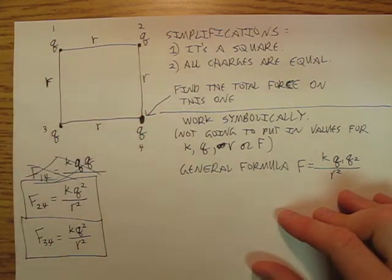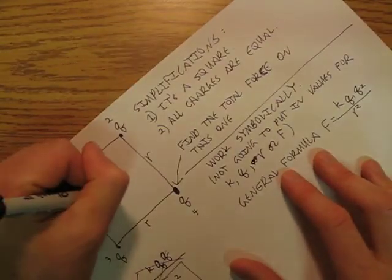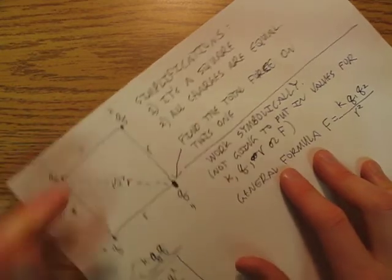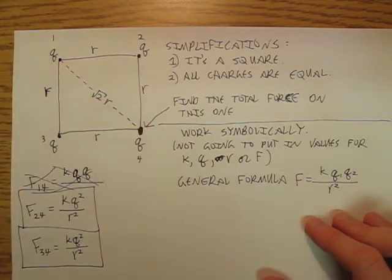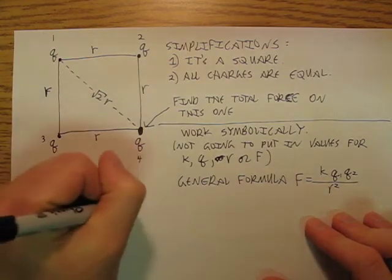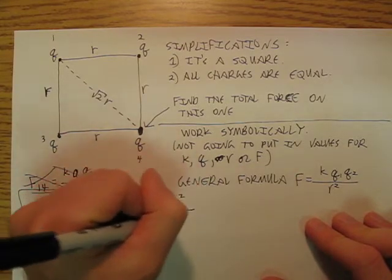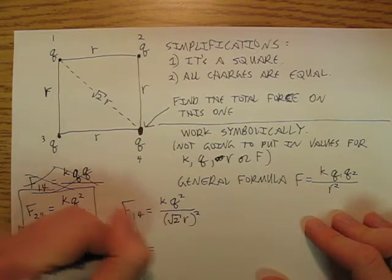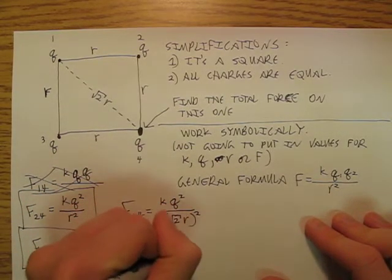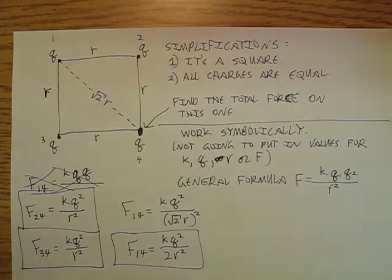But the problem that we run into is what is this distance here? So I want you to spend a little bit of time, hit pause and think about it, what's that distance there? Well I'm going to give it to you right there, it's the square root of two times r. So I'm going to have F one four is going to be k q squared again over square root of two r all of that squared. So F one four is going to be k q squared over two r squared. And there's my three forces, so I'm done. Well I'm not quite done.